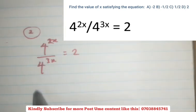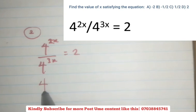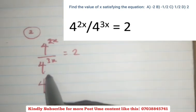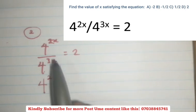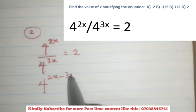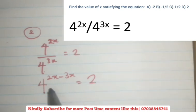So you can easily simplify these parts by writing a single 4, which is the base. Then you subtract the powers. So you're going to have the power at the top, 2x minus the power at the bottom, 3x. And this will give us 2 on the right hand side. Then from here, 2x minus 3x, that will give you minus x. So you have 4 to the power minus x is equal to 2.